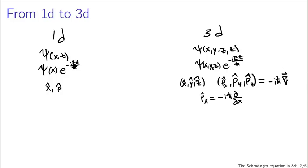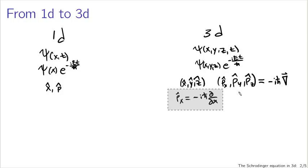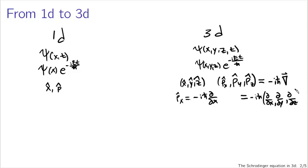This full vector momentum operator is going to be minus i h-bar and then partial derivative with respect to x, partial derivative with respect to y, partial derivative with respect to z. The position operator behaves similarly: x-hat is going to be the x-coordinate multiplied by whatever you're acting on — the wave function. Similarly for y-hat being the y-coordinate multiplied by, and z-hat being the z-coordinate multiplied by.